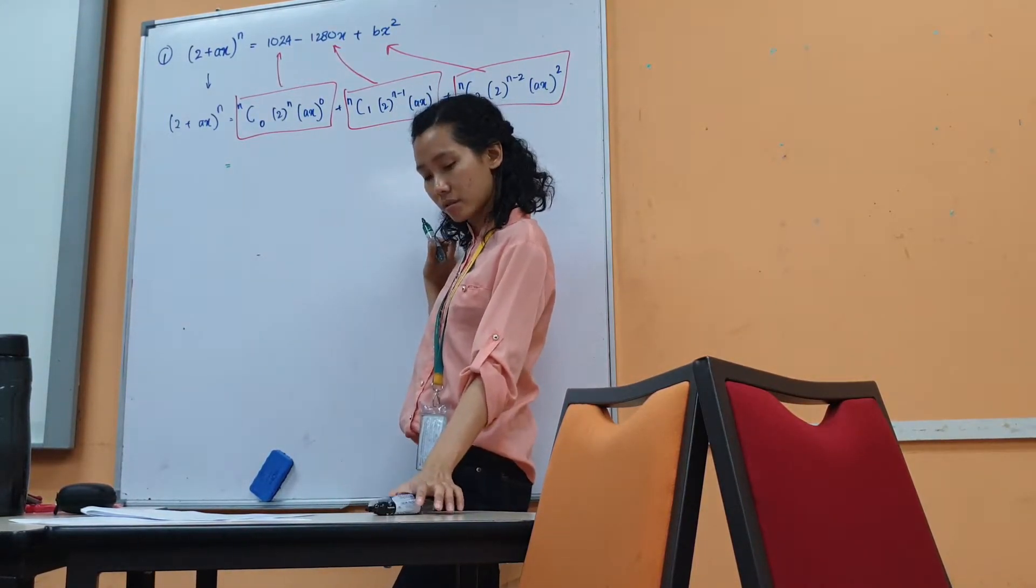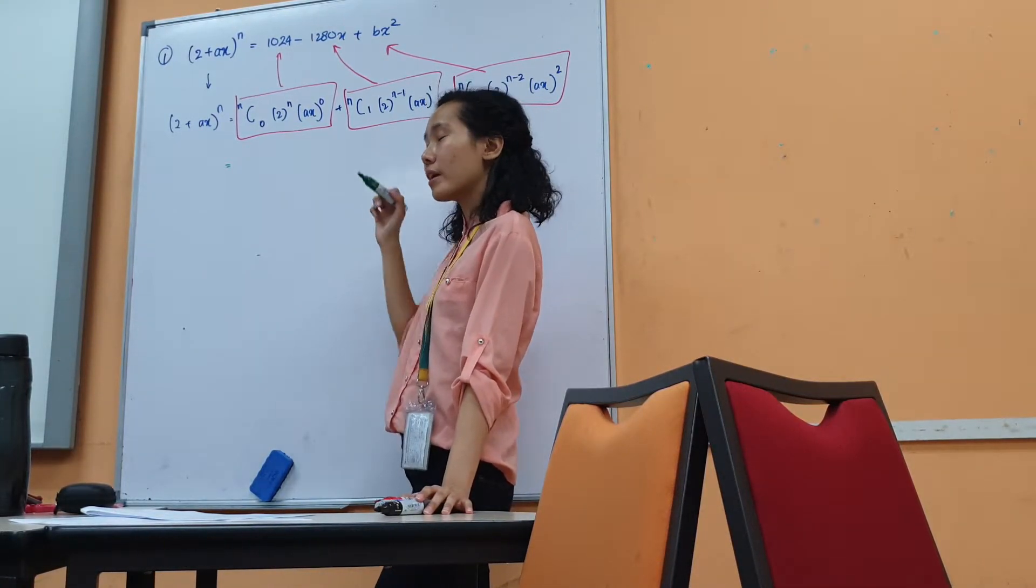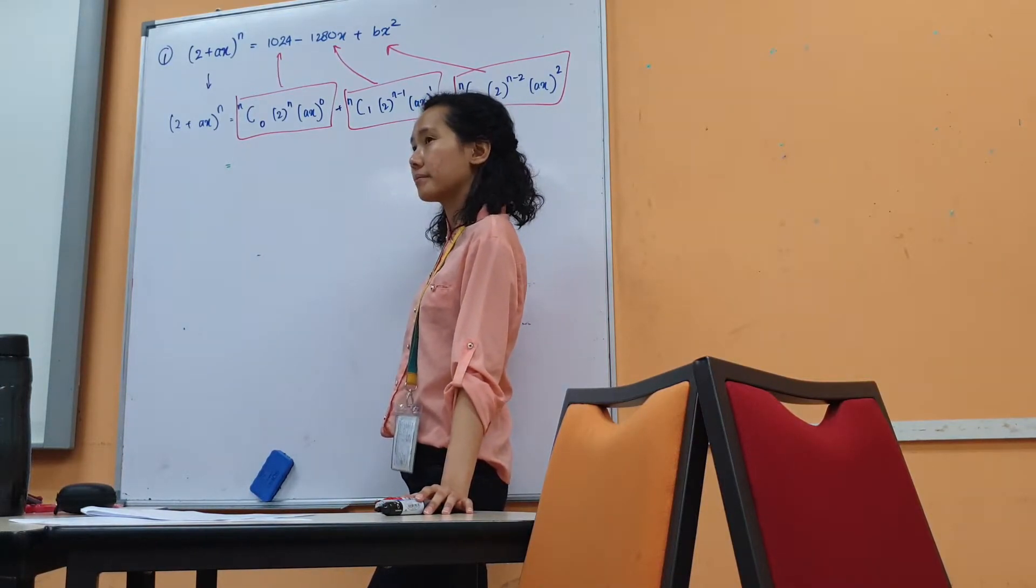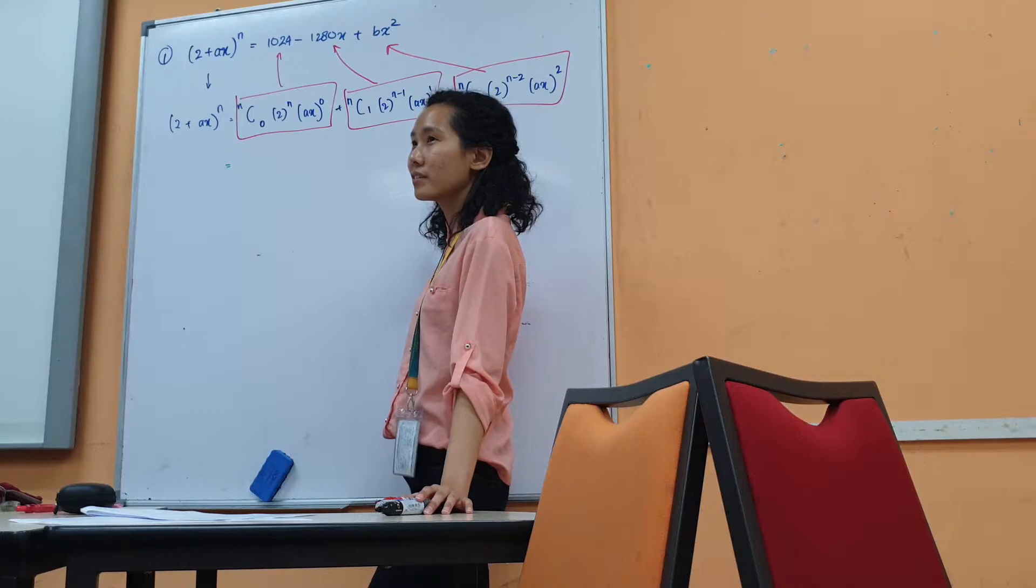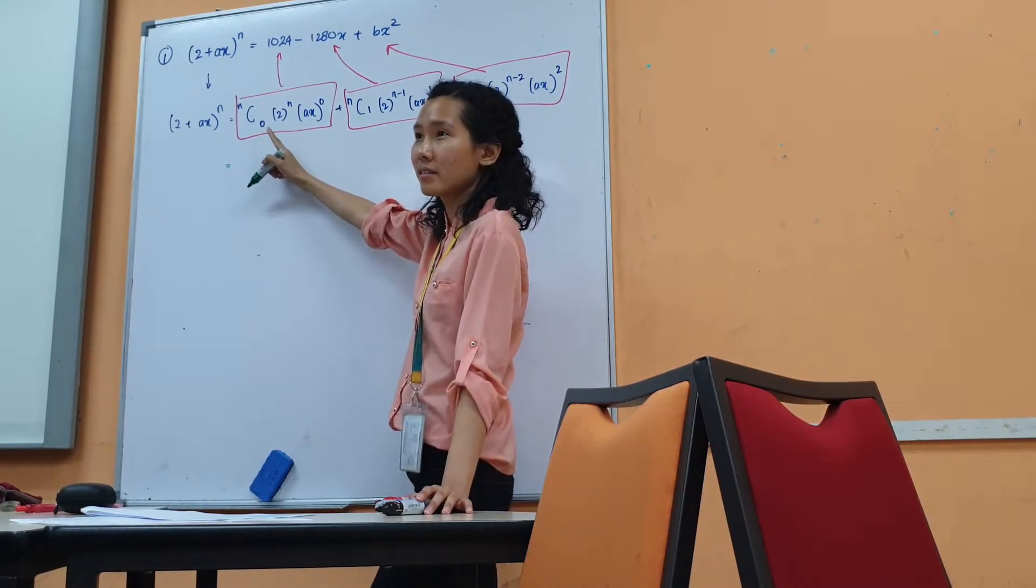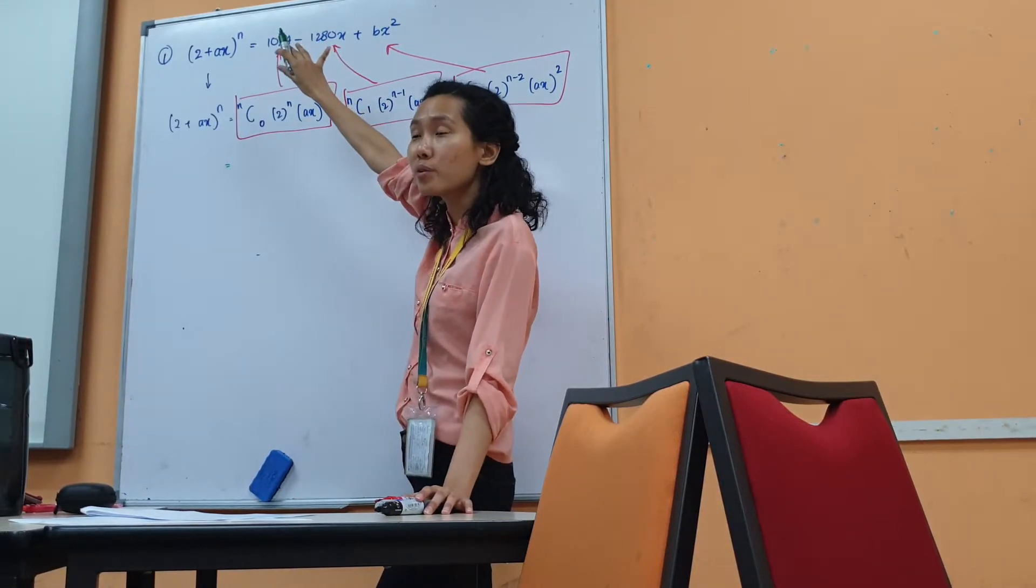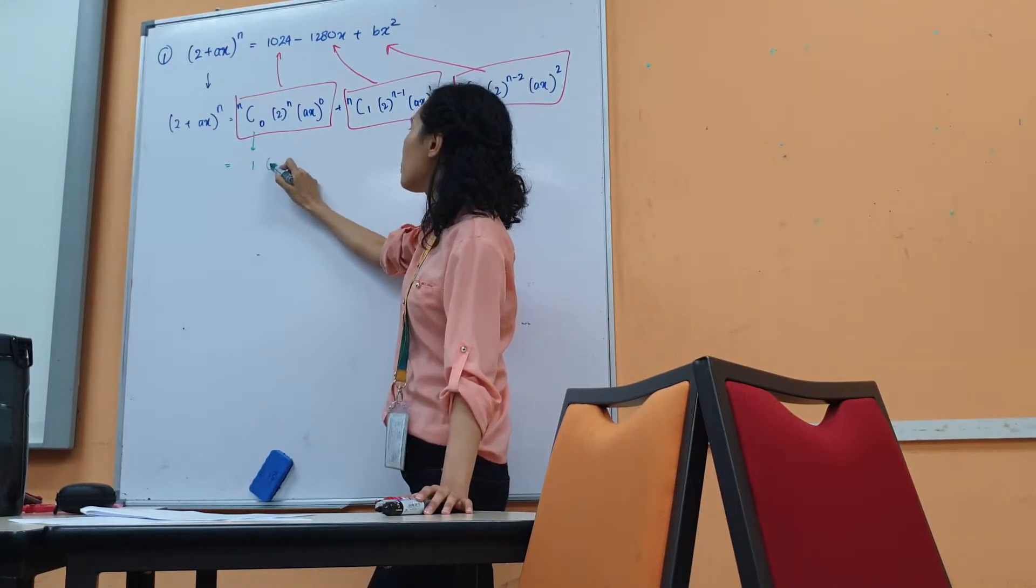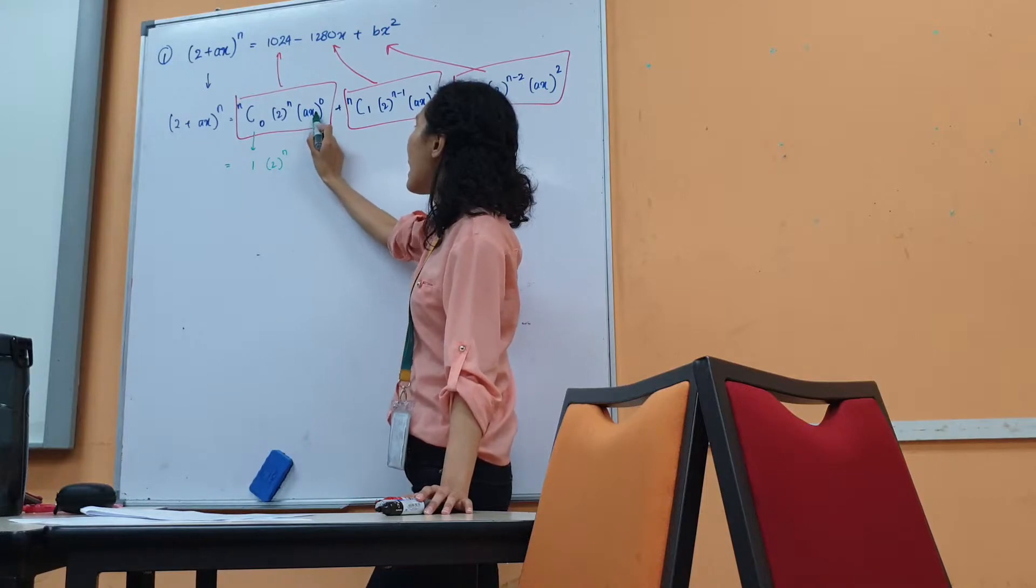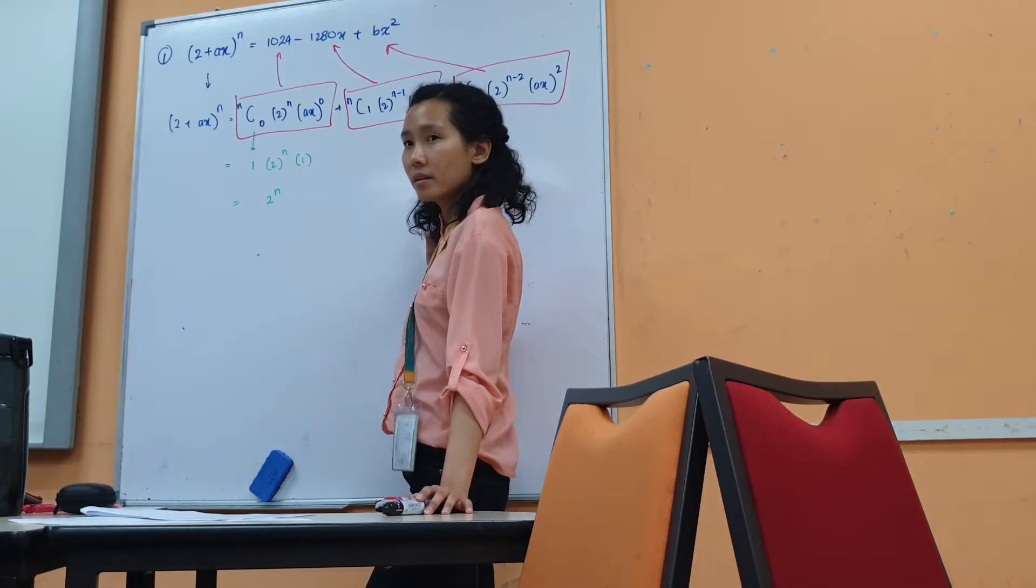Nicholas, what is NC0? NC0 is unknown? Can you try it in your calculator? 5C0, what do you get? 1. 4C0? 1. 100C0? 1. So NC0 is... why is it unknown? I don't care what's my N, but whatever N I put, I'm going to get 1. Are you okay? So this guy is 1. 2 to the power of N, let it be, because I don't know. Anything to the power of 0 is 1. So this is left with 2 to the power of N. Understand?